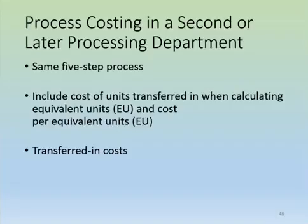As we continue through multiple departments, we use the same five-step process costing procedure to determine equivalent units, with one major difference: we must consider the costs transferred in to department two from department one when calculating equivalent units and cost per equivalent unit. Transferred-in costs are incurred in a previous process and carried forward as part of the product's cost. We repeat that journal entry until the process is complete, at which point costs flow into finished goods inventory and ultimately into cost of goods sold.